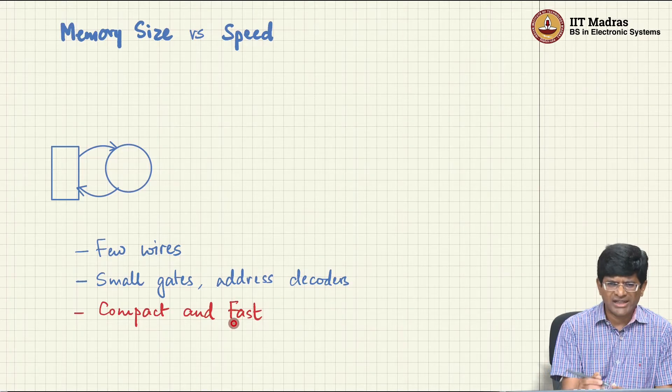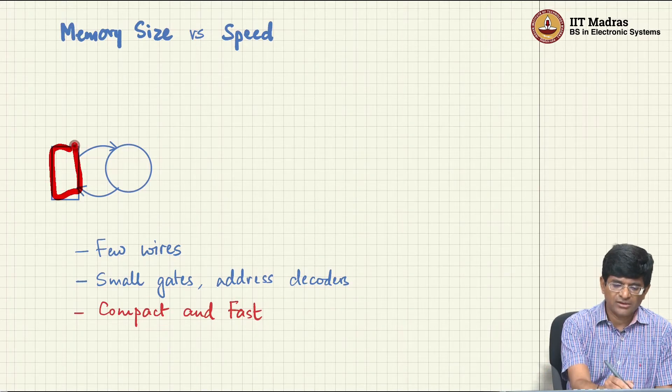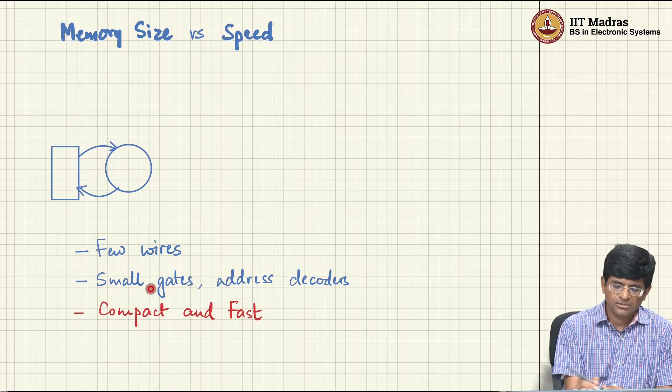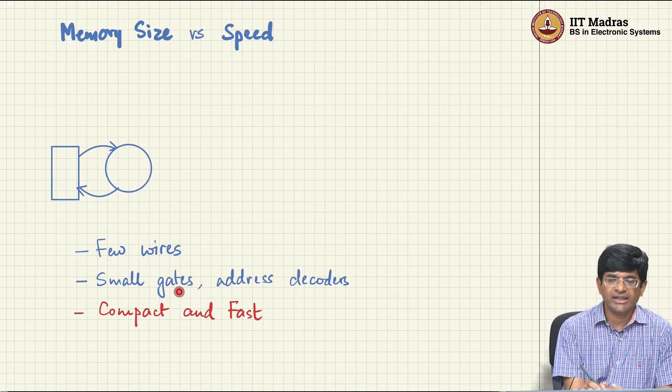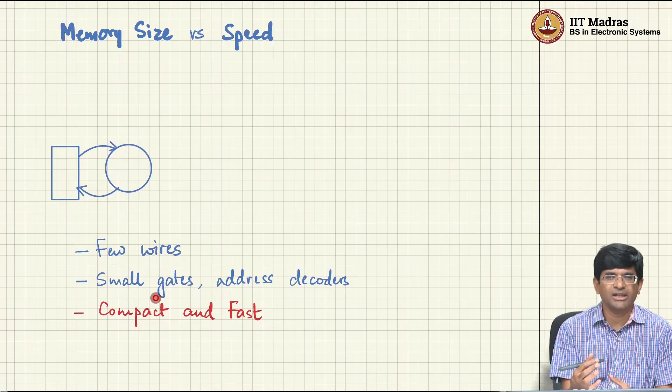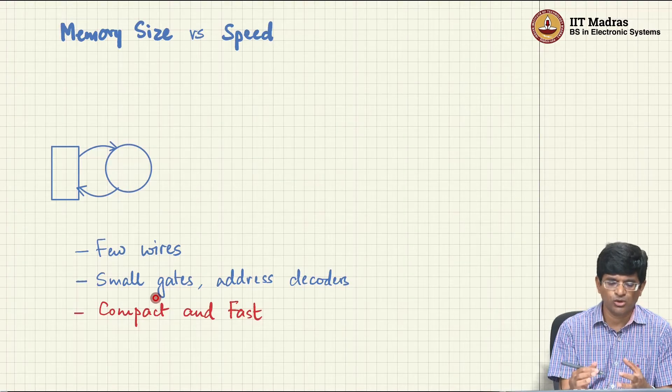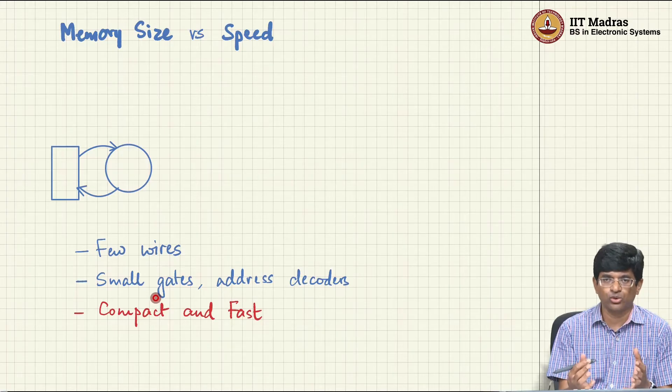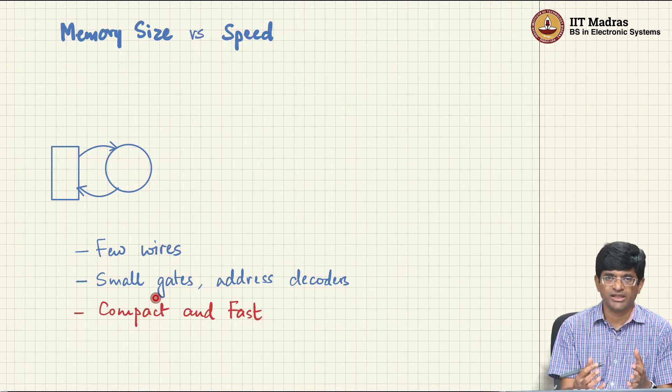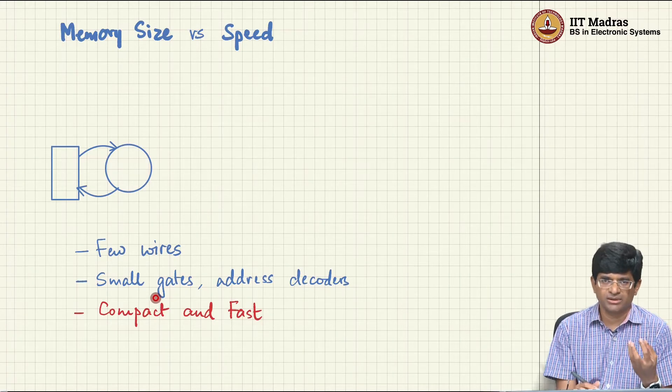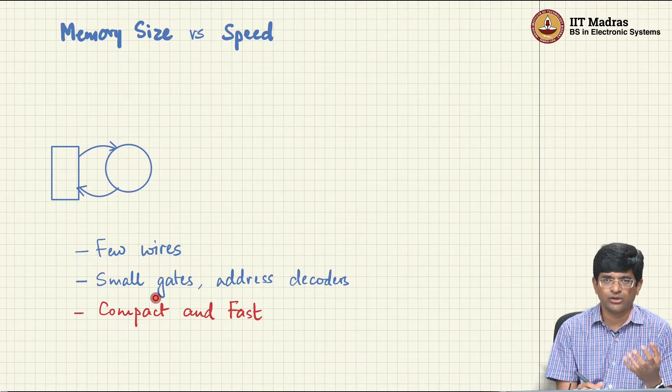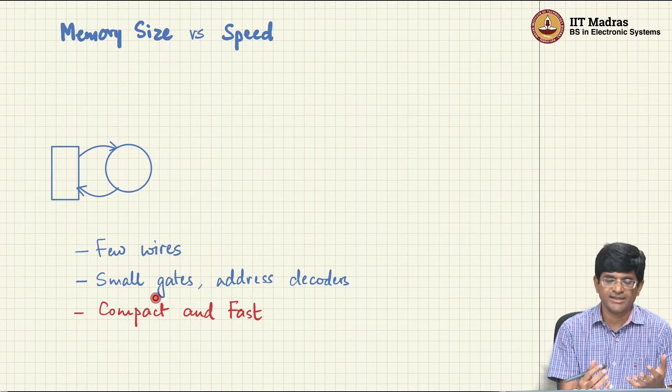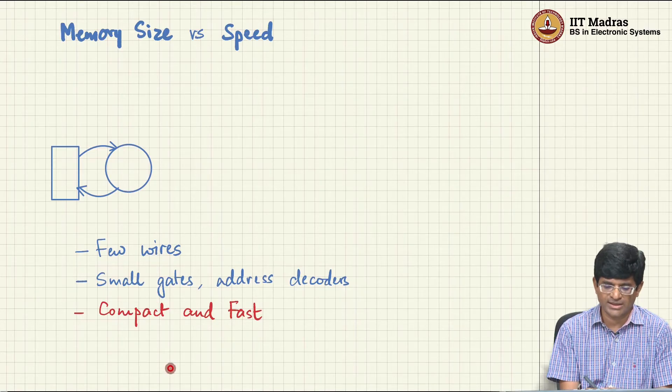Address decoders could be fairly small provided that my memory itself is small and I can probably get by with relatively small gates or more importantly a small number of gates. Once again, the term gates for those who have not yet done a course on digital logic, those are the fundamental building blocks of how we are building this entire digital circuit.